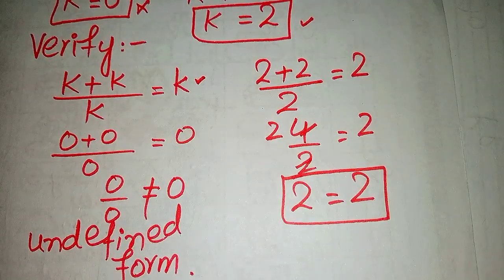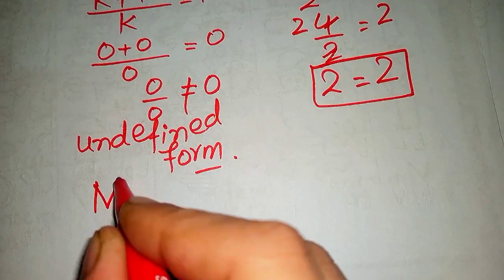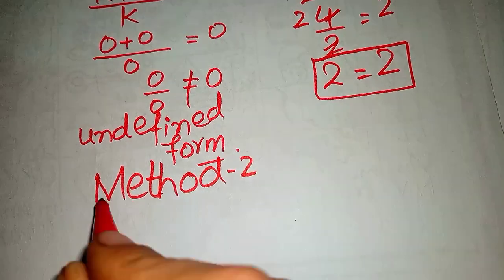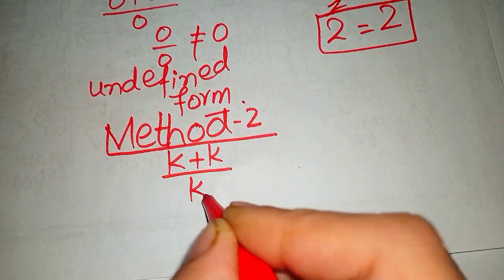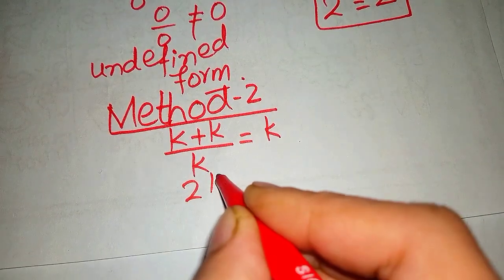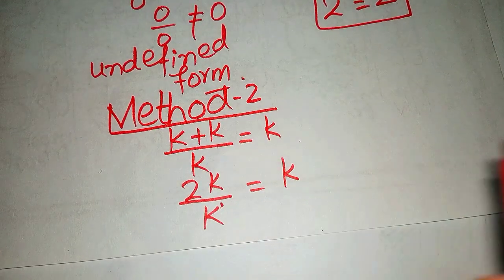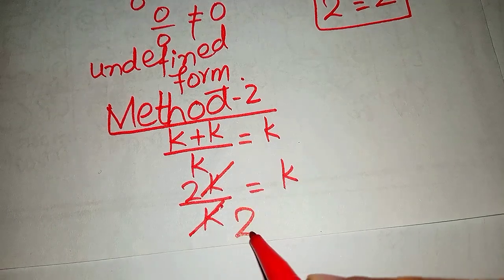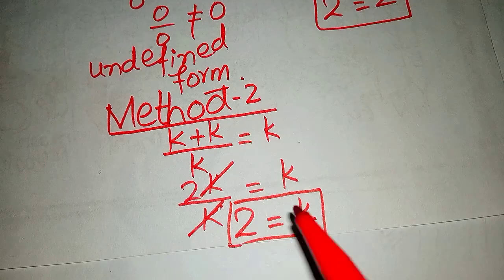Now we apply Method 2 for solving this equation. We write k plus k over k equals k. k plus k becomes 2k over k equals k. This k cancels with the denominator, giving 2 equals k. So the value of k equals 2.